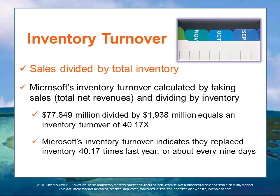Inventory turnover is calculated as total net revenues divided by inventory. In Microsoft's case, that's $77.8 billion in sales divided by $1.9 billion in inventory, giving 40.17 times. That gives you a sense of how quickly inventory turns over.